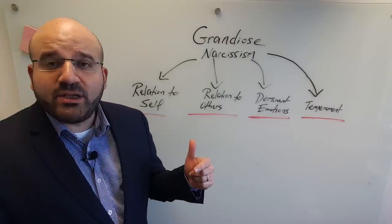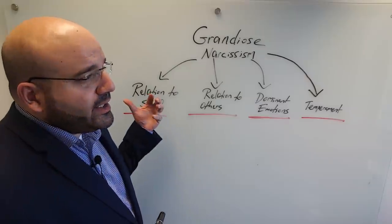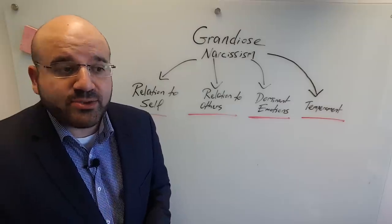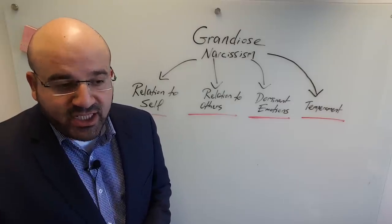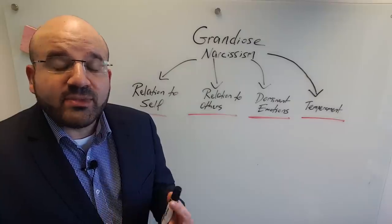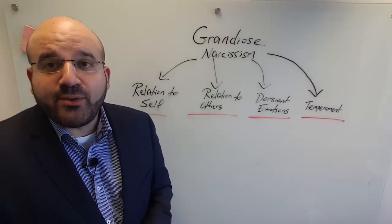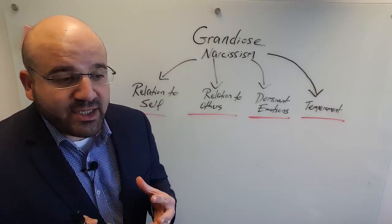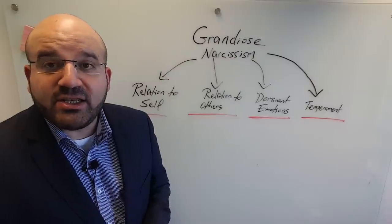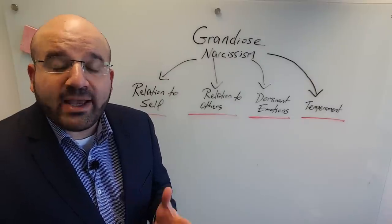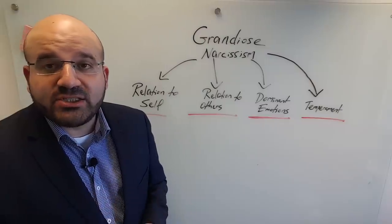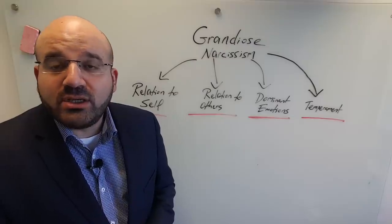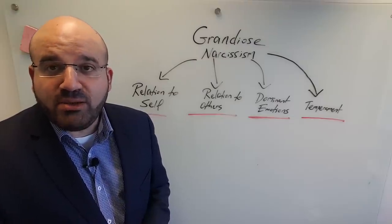In today's video, I'm going to look at grandiose narcissism, or overt narcissism, which is the prototype of narcissism we see in the clinical literature. That's the sort of narcissism we see in popular culture, and it is also the prototype in the DSM-4 and 5, the Diagnostic and Statistical Manual, which is the document used to guide diagnosis within the mental health community.